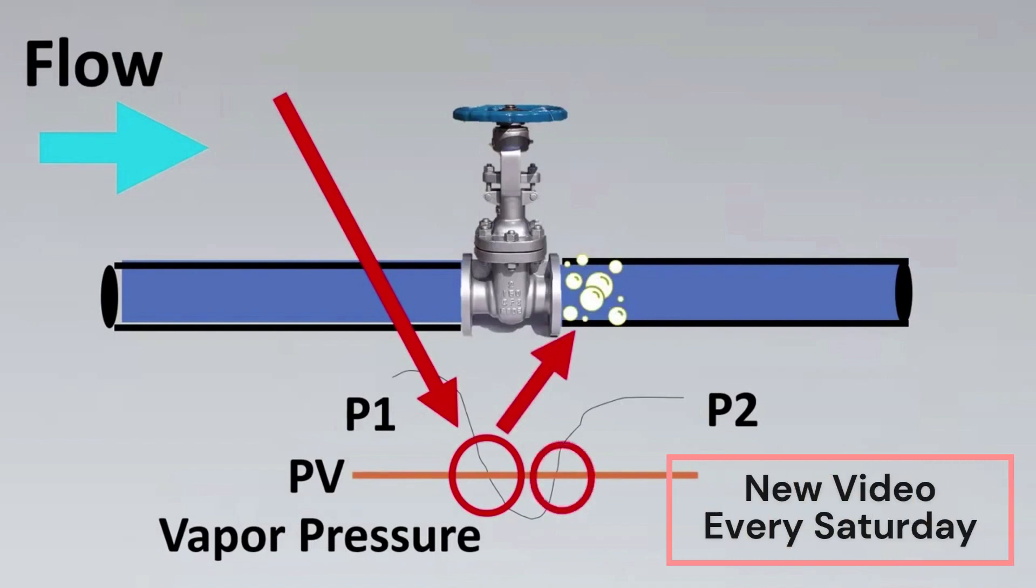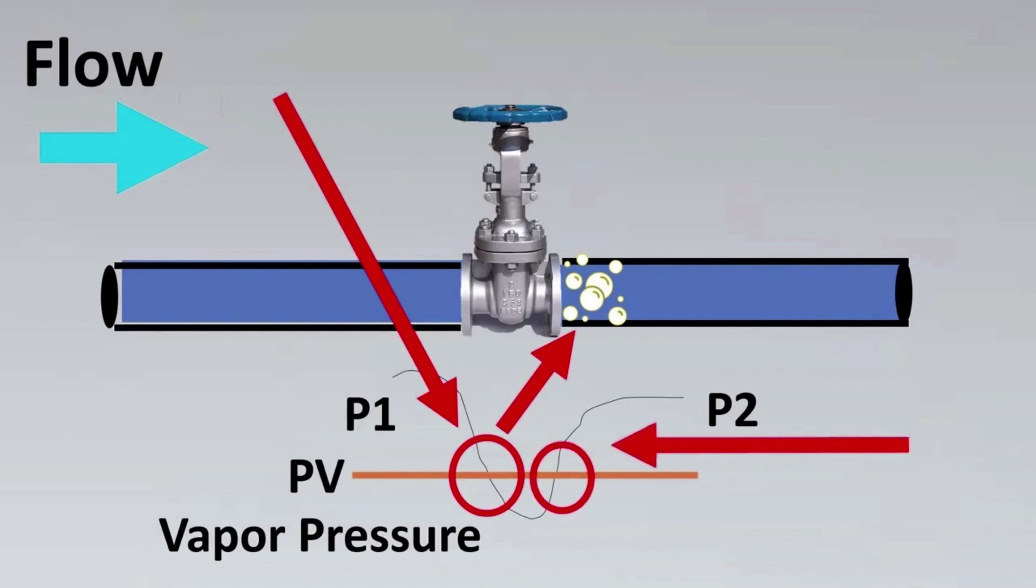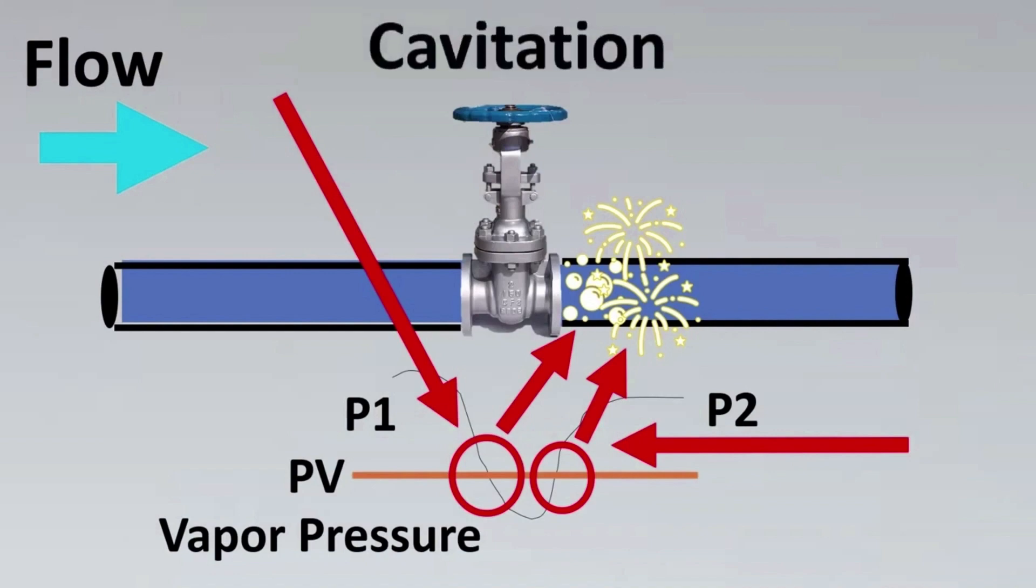At the exact opposite side, the vapor is going to turn back into liquid state. Here, what is going to happen is the bubbles are going to burst to come back to liquid state, which is called popping, which has very high velocities that can damage the valve and the piping downstream. This entire phenomenon is called cavitation.